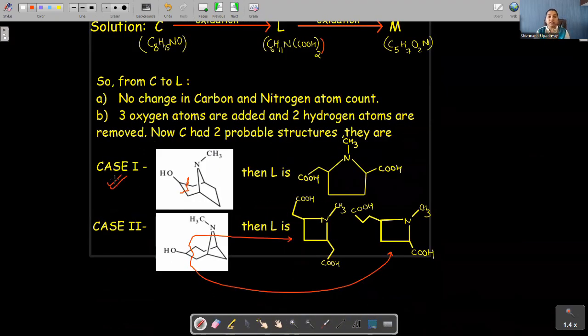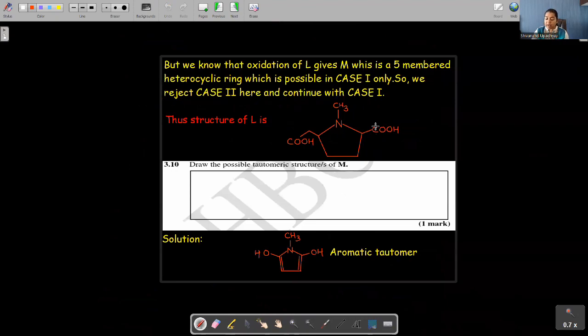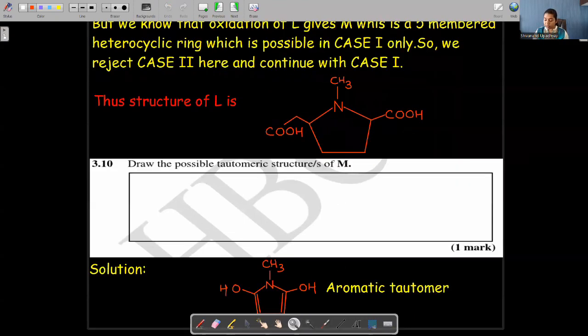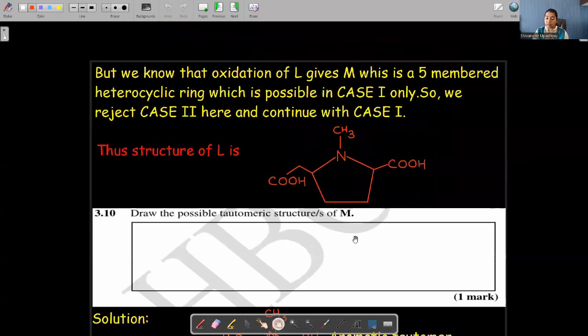And therefore we got the C, structure of C to be this. And this structure, so we also got what is L from this. L is this structure. From here only we got L also.